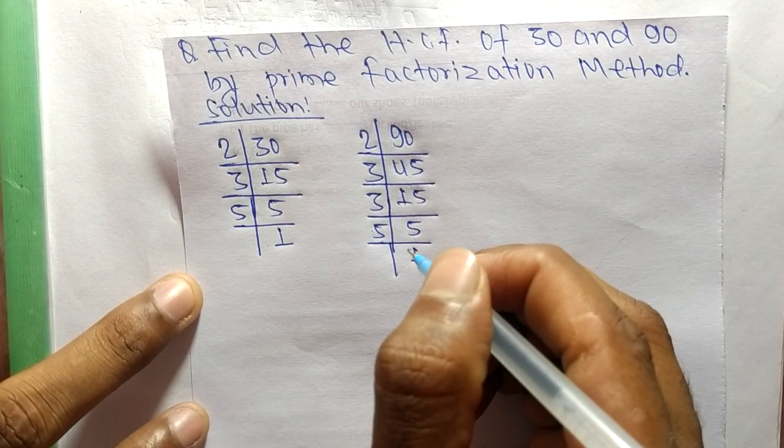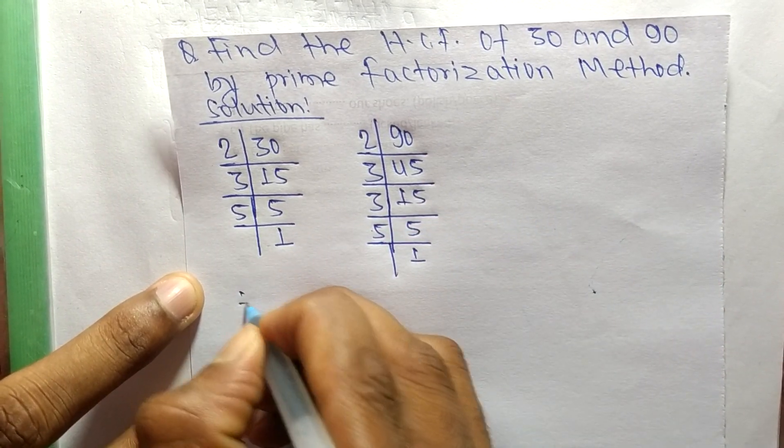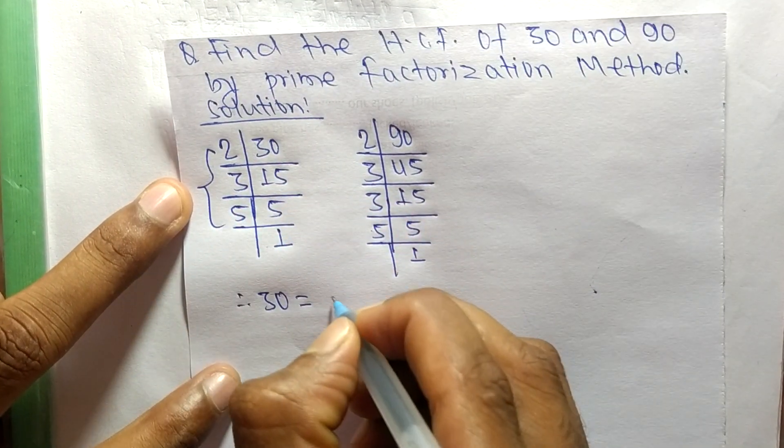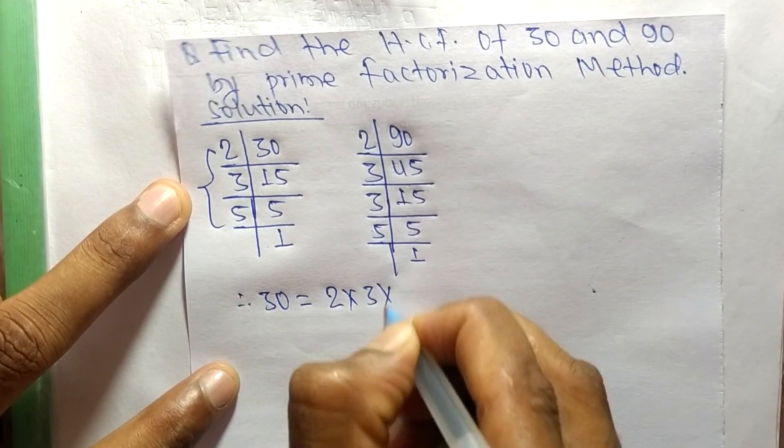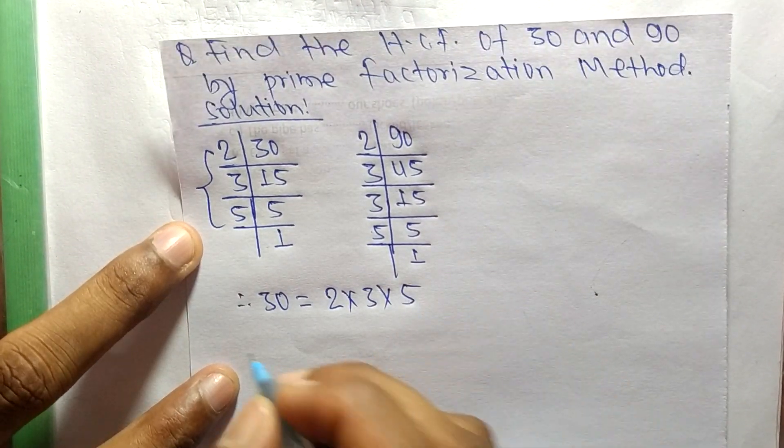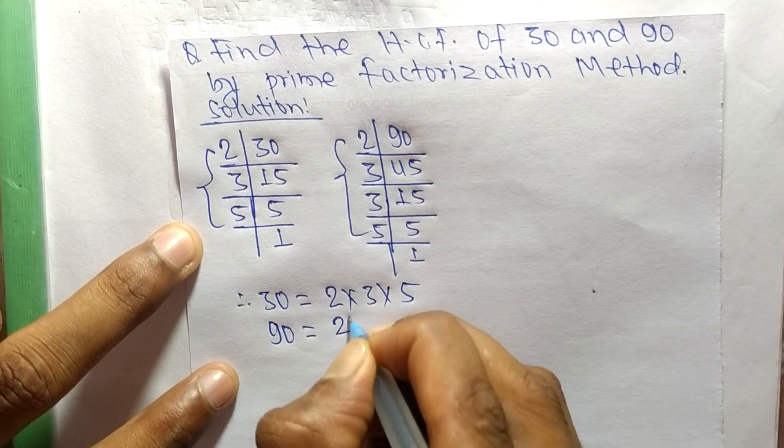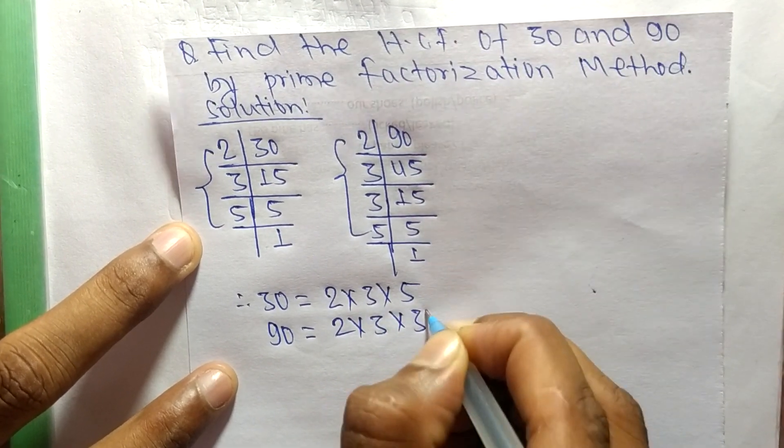Now from these prime factors we can write: 30 is equal to 2 times 3 times 5. Likewise, 90 is equal to 2 times 3 times 3 times 5.